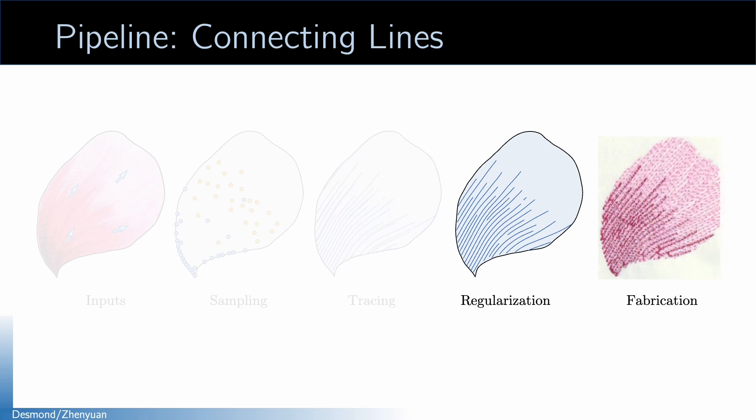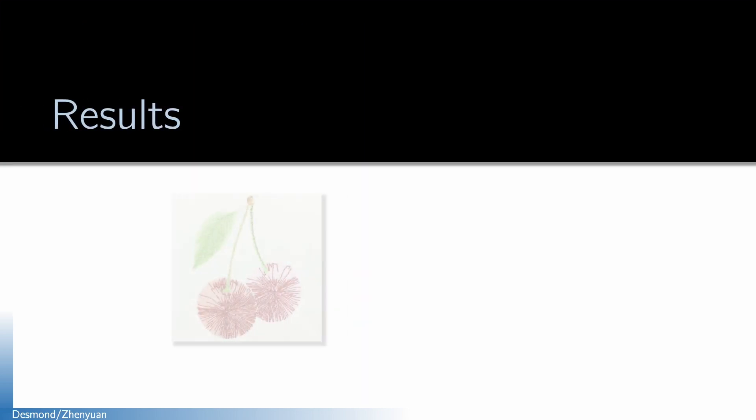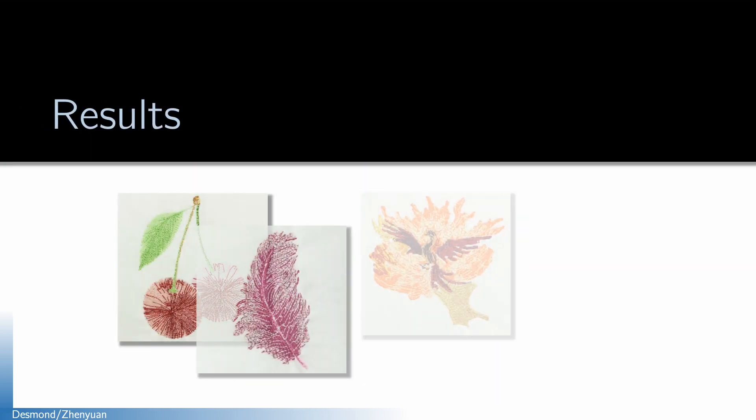After this step, we already have a good approximation for the streamlines. Before sending the lines to the machine to sew, we do some post-processing that connects all the lines into a single loop so that the machine doesn't need to cut in the middle of sewing, making it less likely to break down. And that's pretty much all of our method.